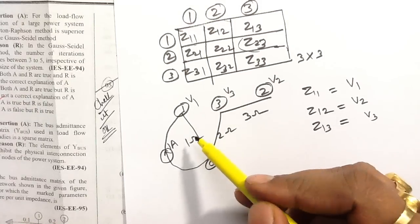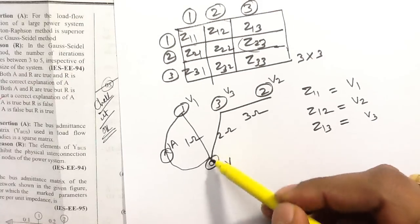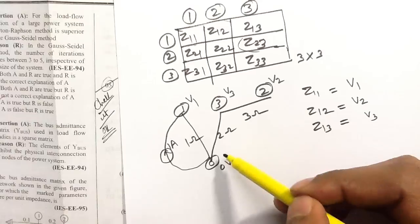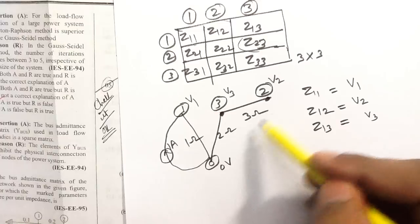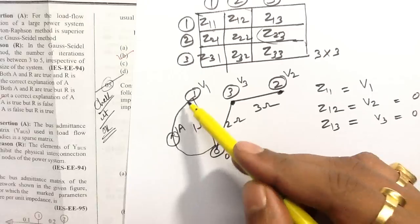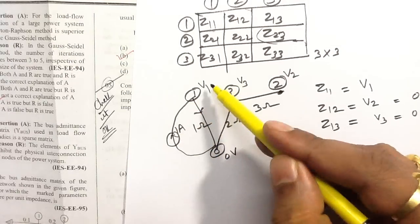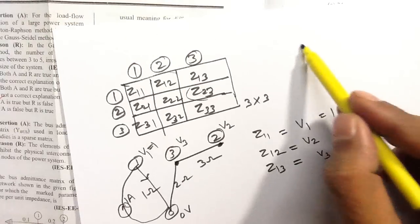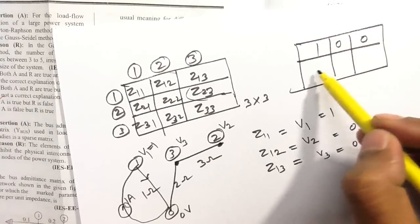With good network analysis, you can find that bus 2 and bus 3 voltages are zero because there is no current flow there. So V2 and V3 are 0. Now V1: with 1 ampere current flowing, V1 voltage will be 1 volt. Therefore the first row of the Z-bus matrix is 1, 0, 0.